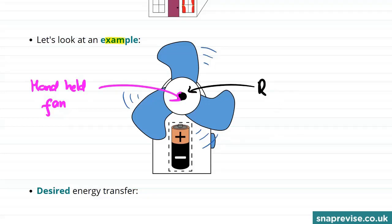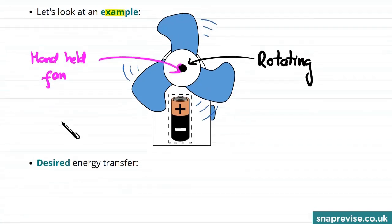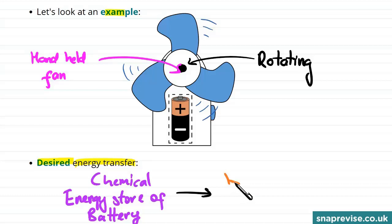The whole point in this fan is to get the blades to spin to push air into our face. So the desired energy transfer is from the chemical energy store of the battery into the kinetic energy of the blades of the fan. So that's the useful energy output there.